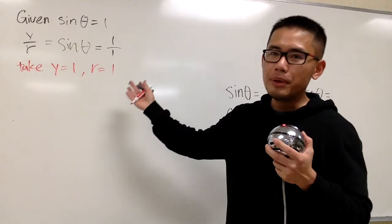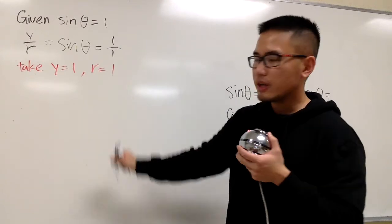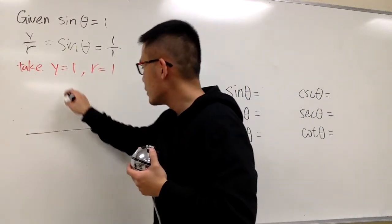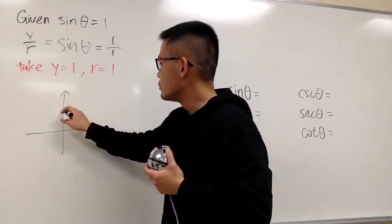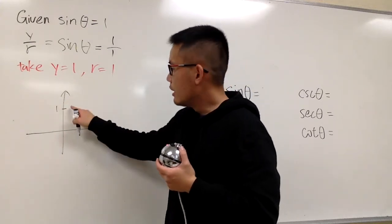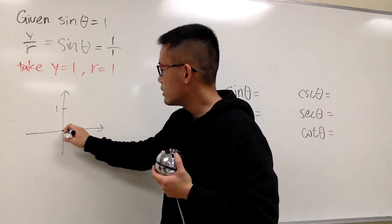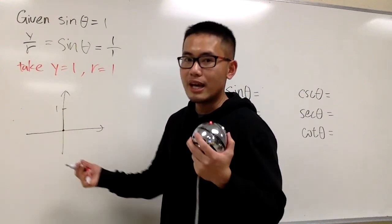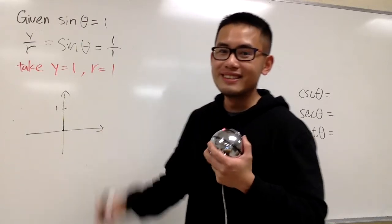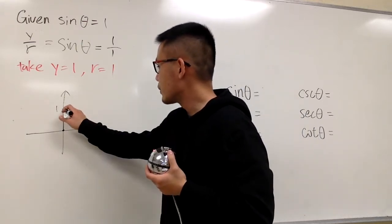In fact, there's only one picture I can come up with in this situation. y is 1, which is right here. And r is 1, that means when you go from the origin to this point, the r is 1. What's x? It will be just 0. So this is the picture that we can come up with.